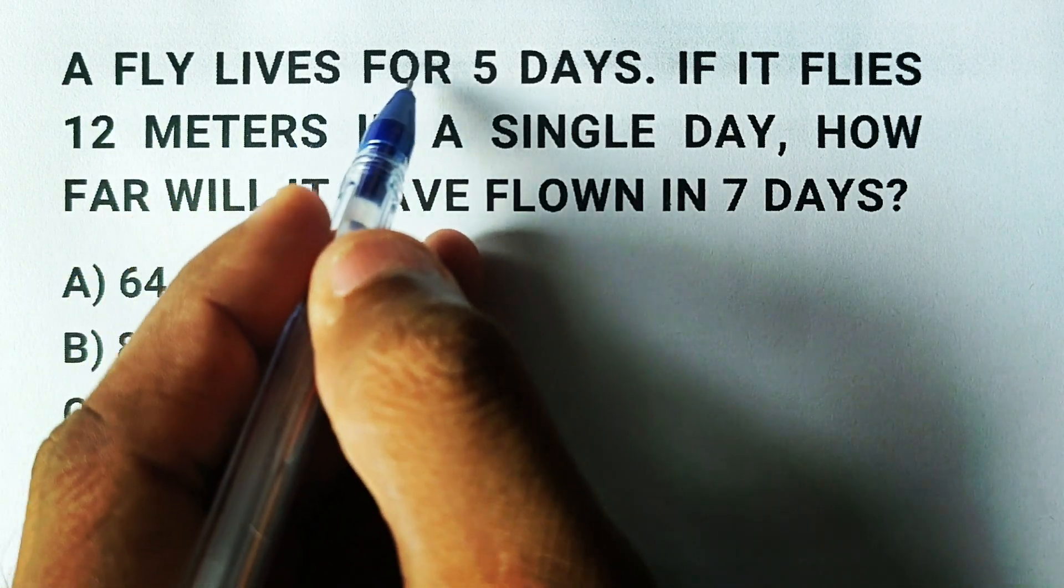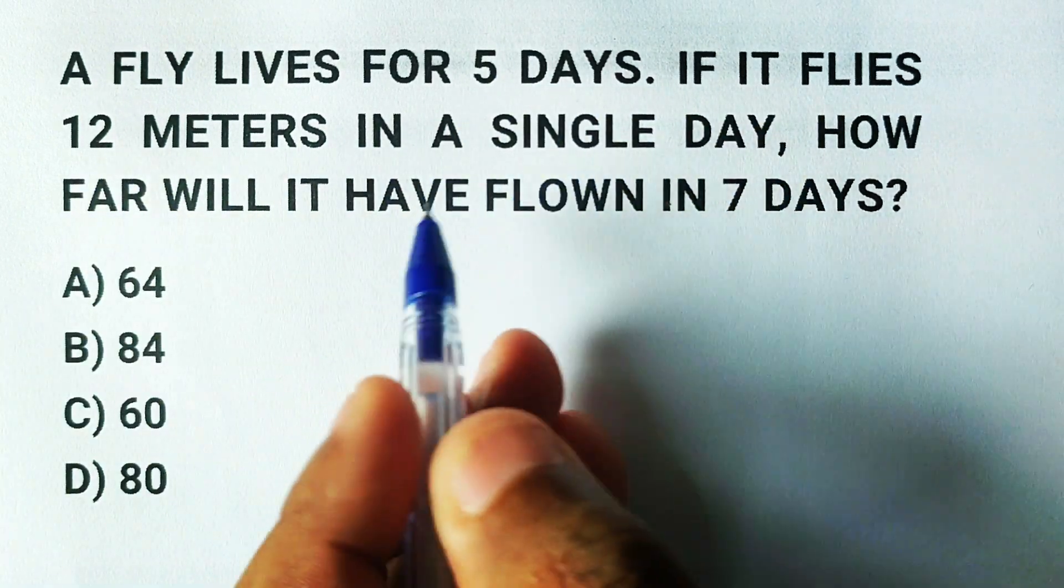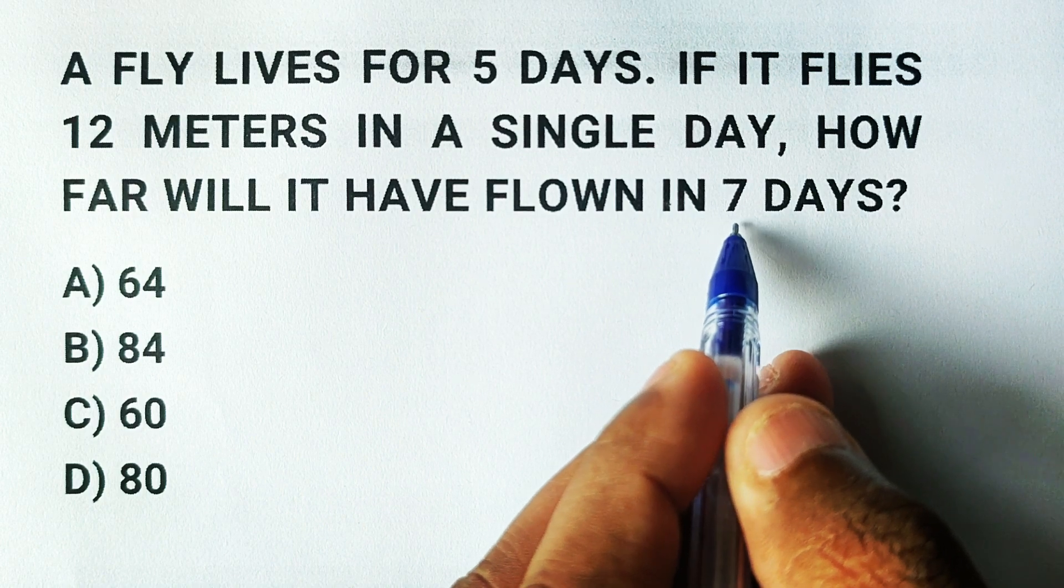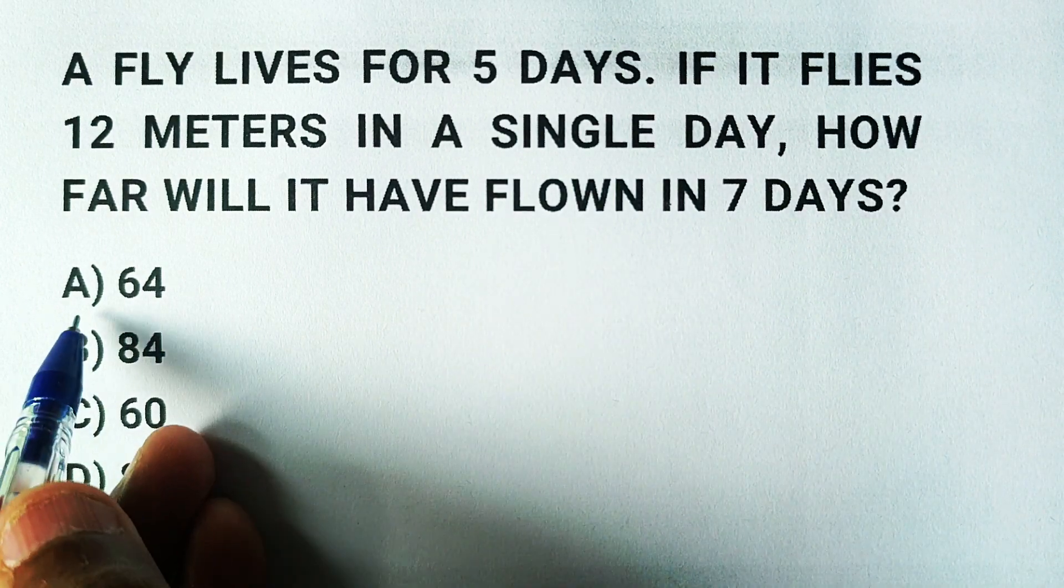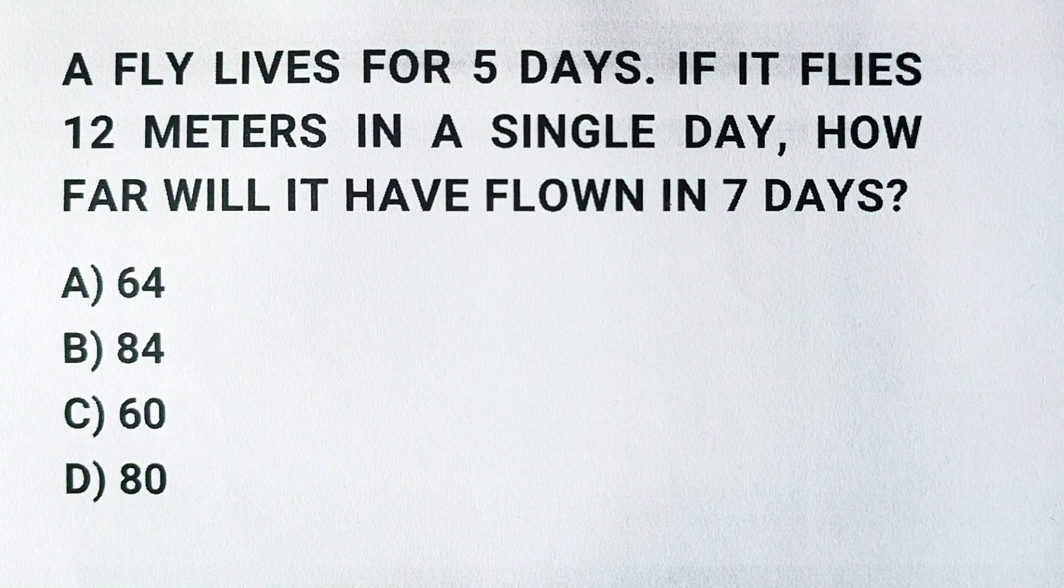A fly lives for five days. If it flies 12 meters in a single day, how far will it have flown in seven days? The answer choices are A: 64, B: 84, C: 60, and D: 80.